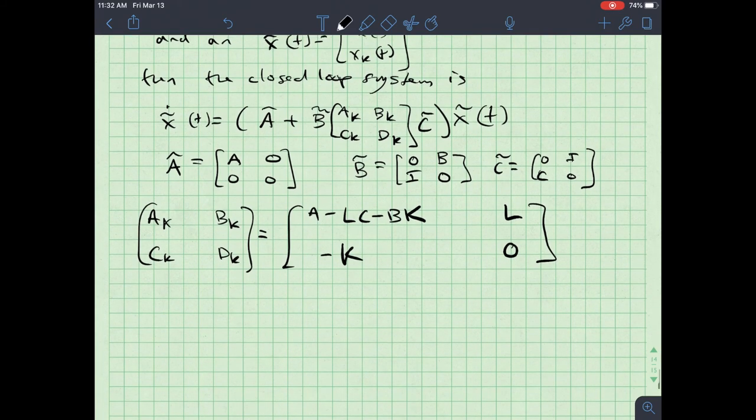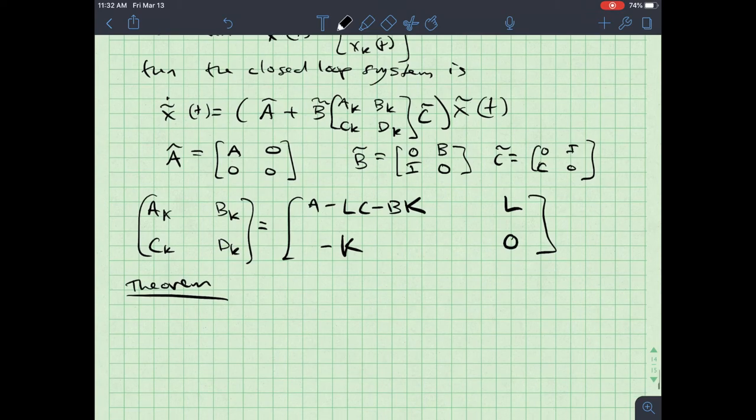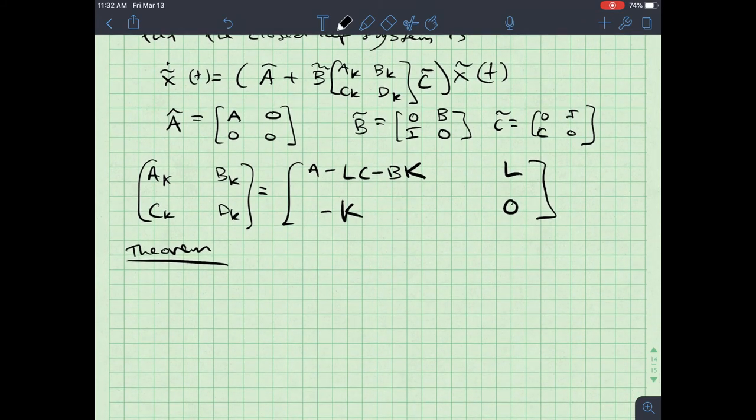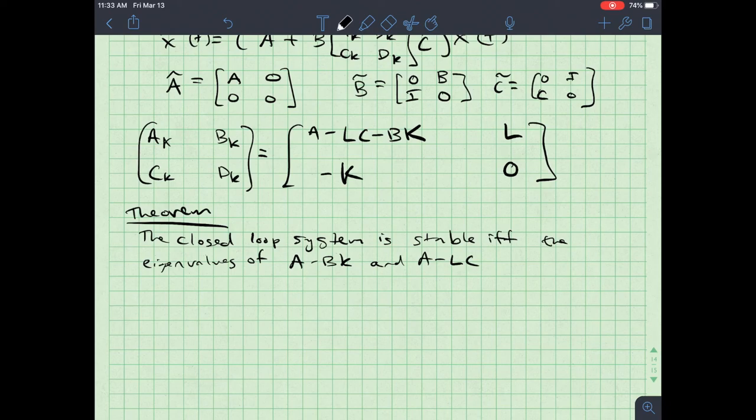Then, what I want to do is introduce a theorem, and this is where all my viewers will turn it off and be super bored, because I'm going to give you a theorem, along with a proof, but we need to do this so that way we can do combined control. So here's my theorem. The theorem is that the closed loop system is stable if and only if the eigenvalues of a minus b k and a minus l c are negative real parts.